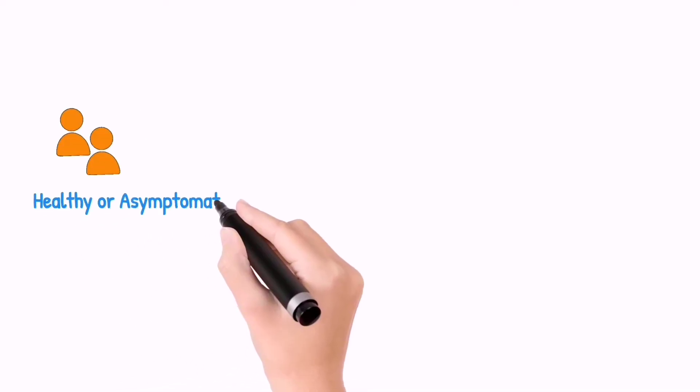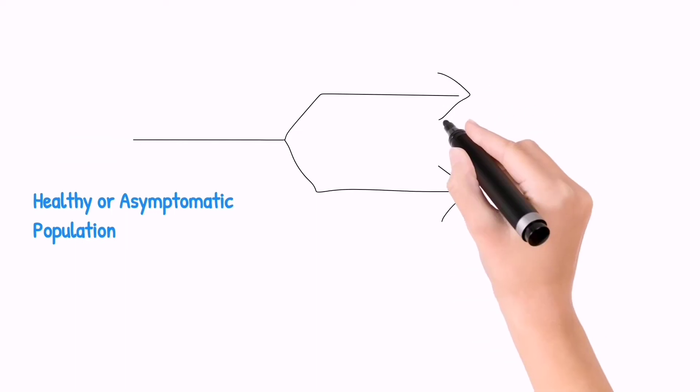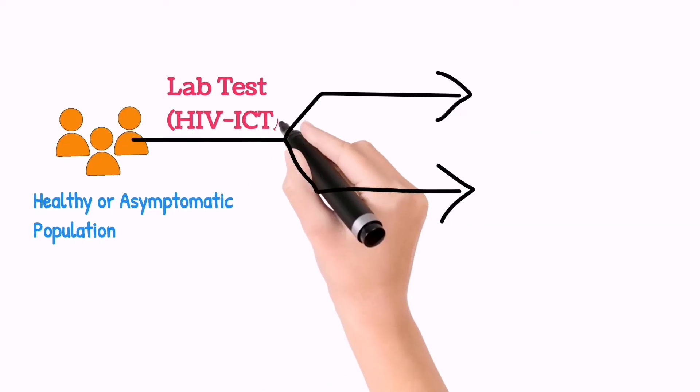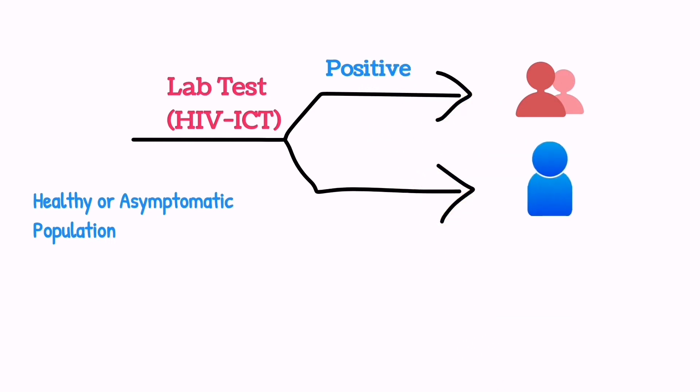For a better concept, let's explain by example. Here you can see on the left side, there is a healthy or asymptomatic population. If a screening test like HIV is done on this population, some people might be positive for HIV and some will be negative. But the positive people then will go through a diagnostic test to confirm this.